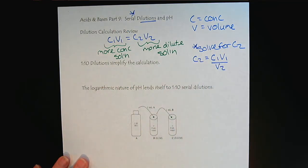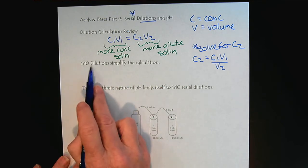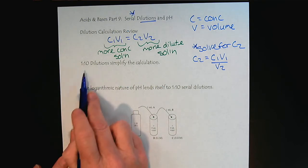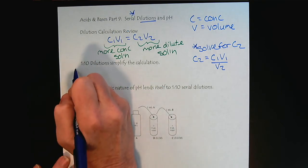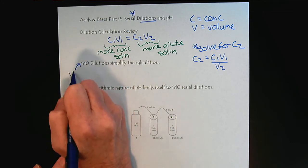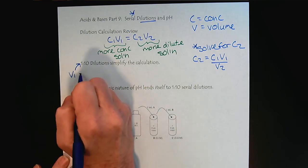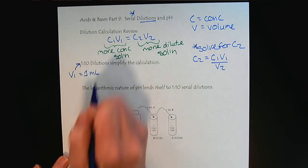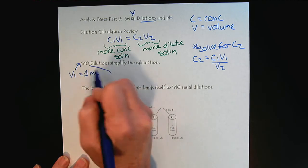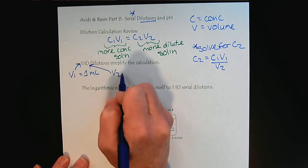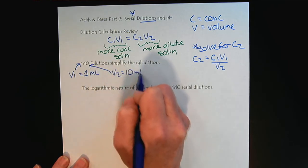Now, the cool part is when we are doing a 1 to 10 dilution, the volume, the initial volume V1, is referred to as the 1, we'll just say 1 mL. And then the 10 refers to V2, and we'll just use milliliters.